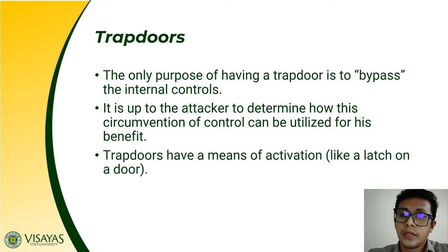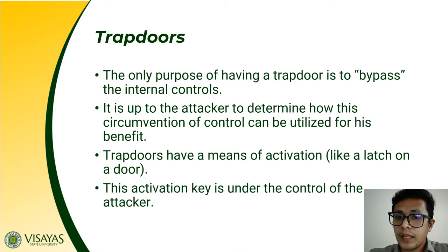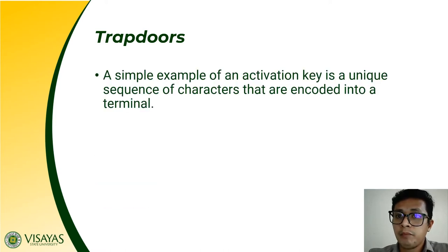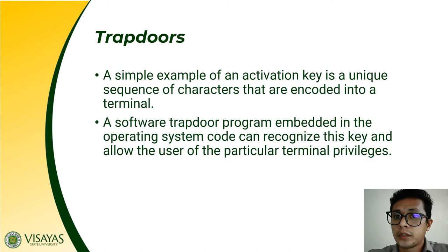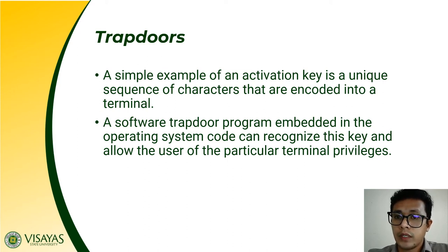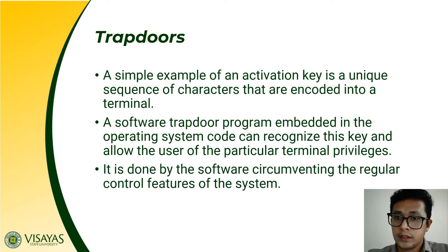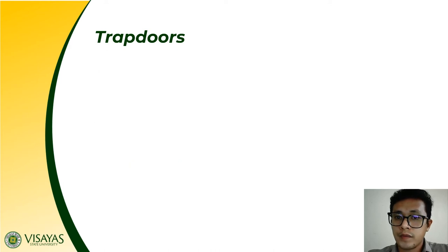Trapdoors also have a means of activation, and this activation key is under the control of the attacker. A simple example of an activation key is a unique sequence of characters encoded into a terminal. A software trapdoor program embedded in the operating system code can recognize this key and grant the user of the particular terminal special privileges, done by software circumventing the regular features of the system.